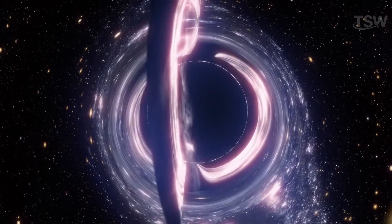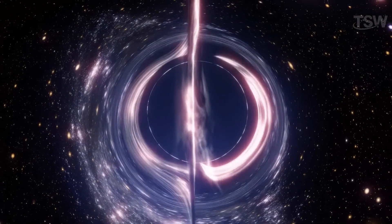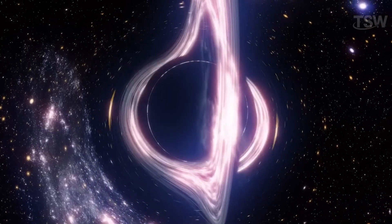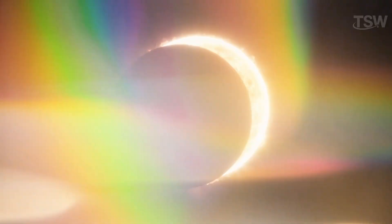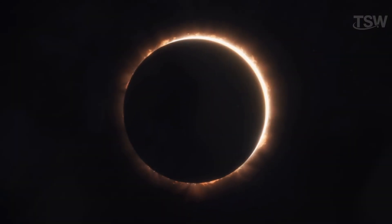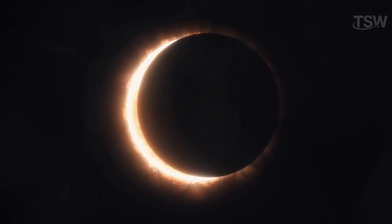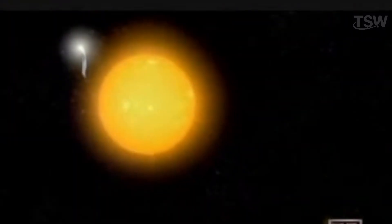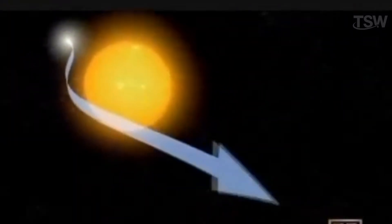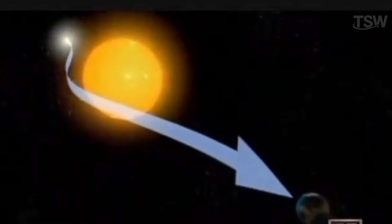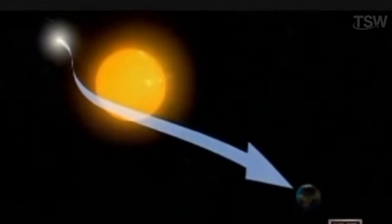This idea might seem a bit abstract, but it was tested in a very practical and historic way. Einstein made a bold prediction. During a total solar eclipse, the light from stars near the Sun in the sky would appear slightly shifted. This would happen because the Sun's gravity would bend the space around it, causing the light from those stars to follow a curved path to reach our eyes.